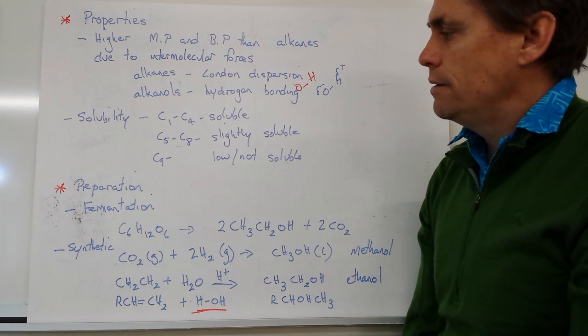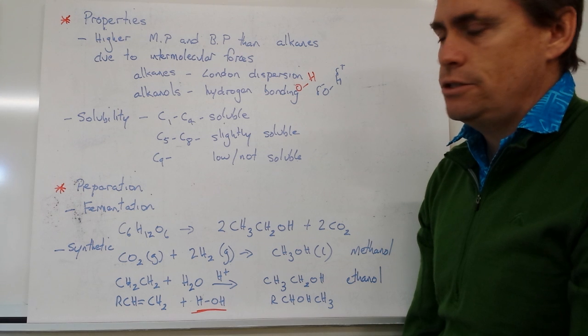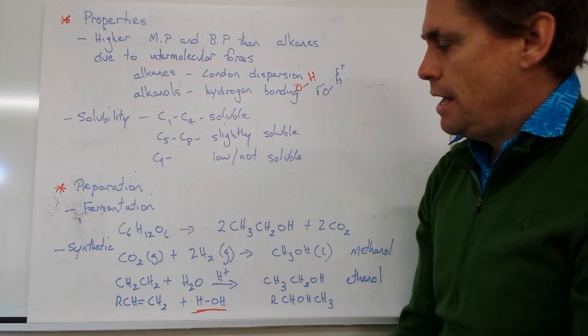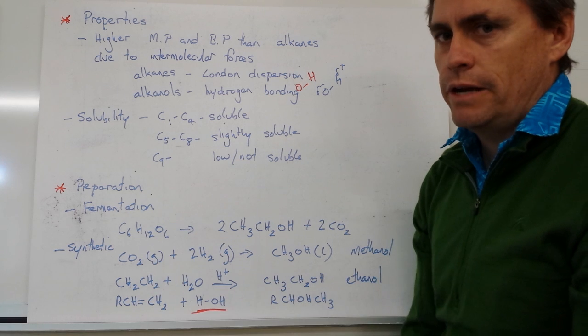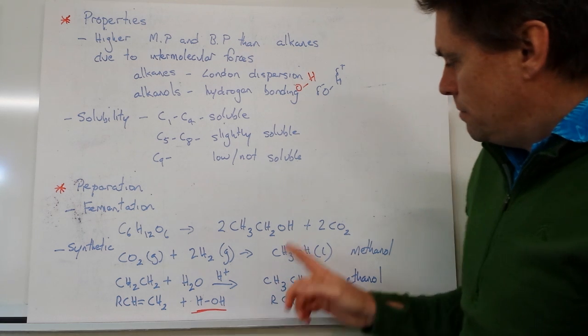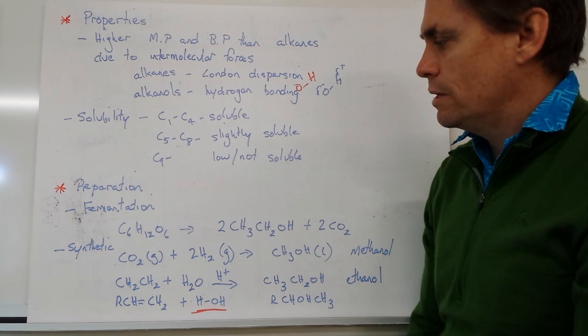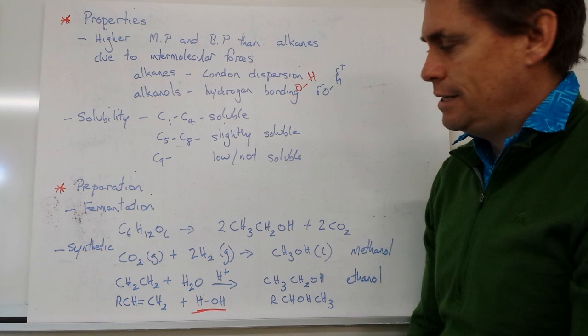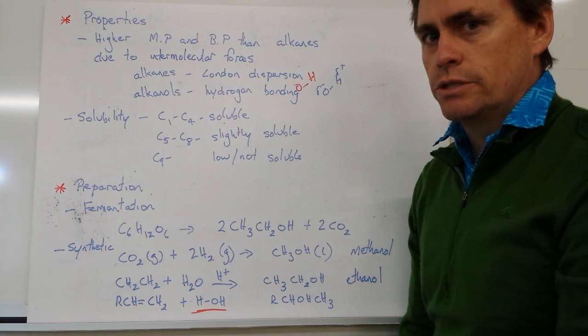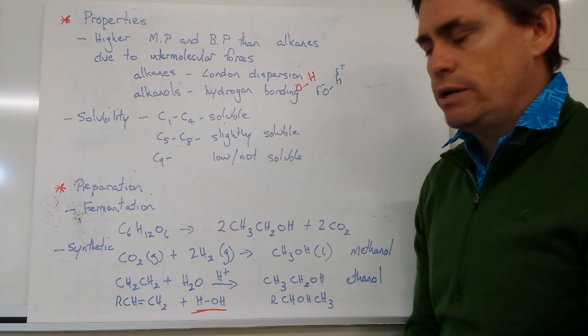So how do we prepare our alkanols? The simplest way, and the way that's been done for thousands of years, is to use a fermentation reaction. Typically we would use a sugar such as glucose, and yeast would have been put in the presence of our glucose or sugar, and we would produce two molecules of ethanol. As a secondary product we'd also produce carbon dioxide, so this is an anaerobic reaction. It doesn't need oxygen but it produces carbon dioxide as a by-product.